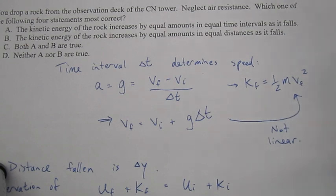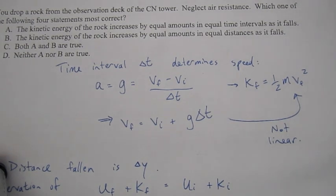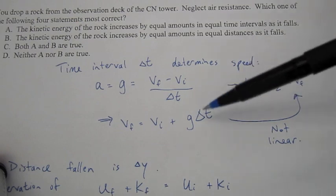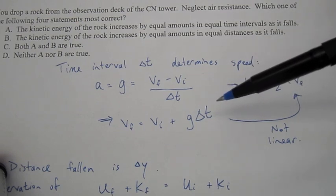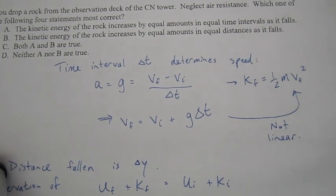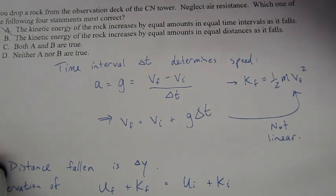So it'll be not linear with V, so not linear with T. So I don't expect that the kinetic energy will increase by equal amounts in equal time intervals. It'll go up in a parabolic fashion. So I don't think it's A.